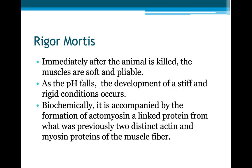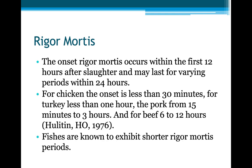Then comes the stage of rigor mortis. Immediately after an animal is killed, the muscles are soft and pliable. As the pH falls, the development of a stiff and rigid condition occurs. Biochemically, it is accompanied by the formation of actomyosin, a linked protein from which the muscle fibers are linked to form actin-actomyosin. The onset of rigor mortis occurs within the first 12 hours after slaughter and may last for a period of about 24 hours.